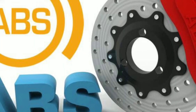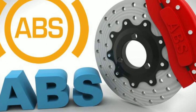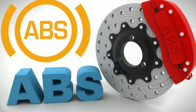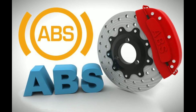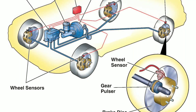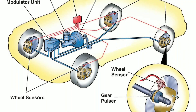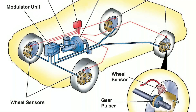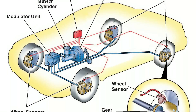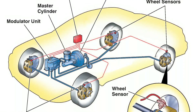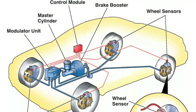Common ABS code causes. Let's talk about some common causes behind ABS codes: wheel speed sensor malfunction, ABS module failure, wiring or connector issues, faulty ABS pump or motor, and low brake fluid level.